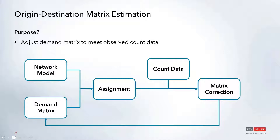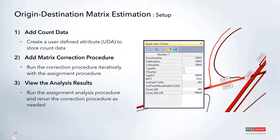Essentially, we'll take our network model and demand matrix, run that through our assignment procedure, and then those assigned volumes will be compared against the count data added to the network. Based on that comparison, a matrix correction procedure will run and update the demand matrix. You can repeat that assignment, count comparison, and matrix correction process until your assignment result aligns well with the count data.